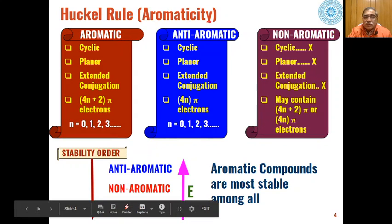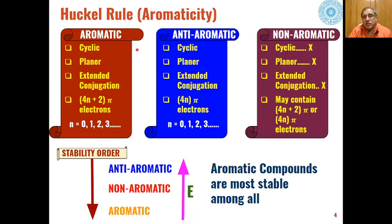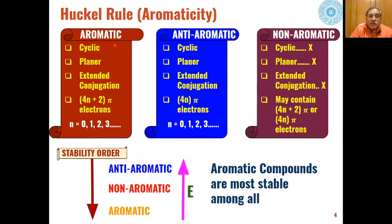On the basis of Hückel's rule, we can differentiate different types of molecules. Molecules may be aromatic, anti-aromatic, or non-aromatic. The four characteristics for a compound to be called aromatic are: it should be cyclic, the structure should be planar, there should be extended conjugation, and the molecule must have 4n+2 pi electrons where n is 0, 1, 2, 3. If the compound follows all four conditions, we call it an aromatic compound.